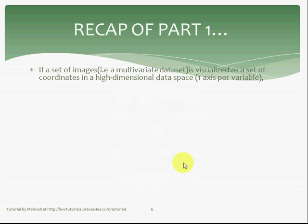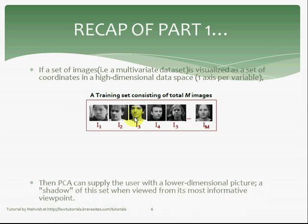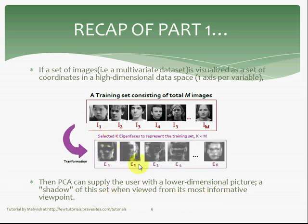For PCA, how it works is that if a set of images — when we're talking about face recognition — is visualized as a set of coordinates in a high-dimensional data space with one axis per variable, such as this training set consisting of images where each pixel in the image is one axis, one dimension in the high-dimensional data space, then PCA can supply the user with a lower-dimensional picture — a shadow of the set when viewed from its most informative viewpoint. And that shadow would be something like this for this training set.